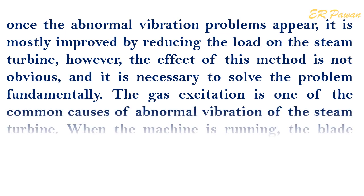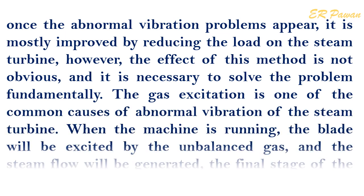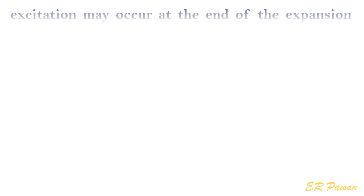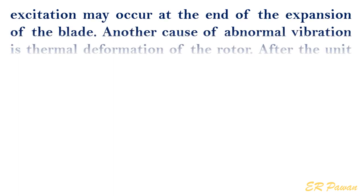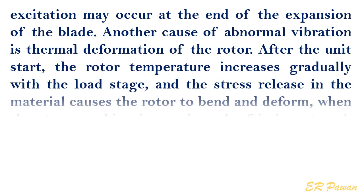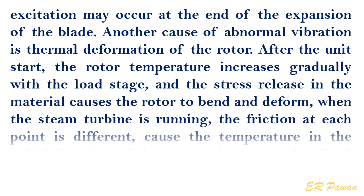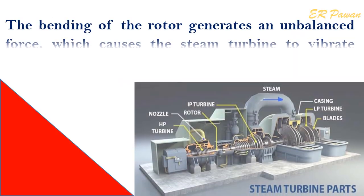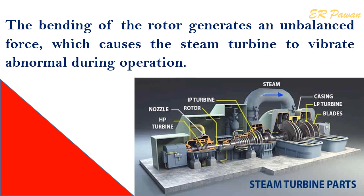Gas excitation is one of the common causes of abnormal vibration. When the machine is running, the blade will be excited by unbalanced gas and steam flow will be generated. Excitation may occur at the end of the expansion of the blade in large units. Another cause of abnormal vibration is thermal deformation of the rotor. After the unit starts, the rotor temperature increases gradually with the load stage, and stress release in the material causes the rotor to bend and deform. When the steam turbine is running, friction at each point differs, causing uneven temperature in the radial direction of the rotor, and localized heating causes the rotor to bend thermally. This bending generates an unbalanced force, which causes abnormal vibration during operation.